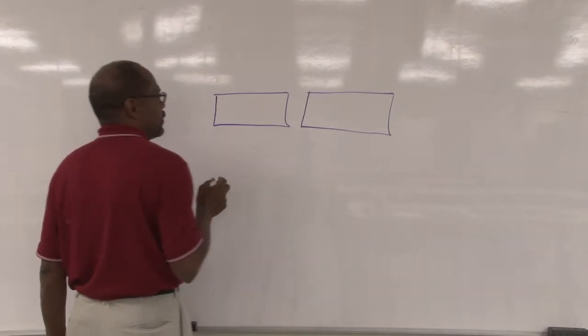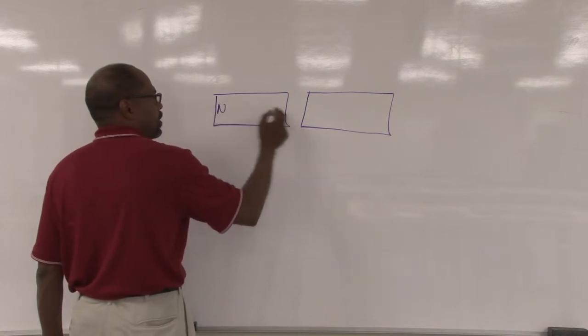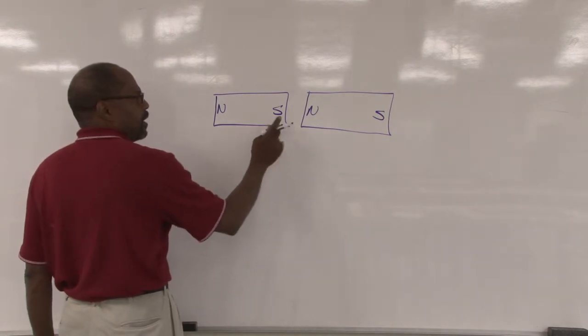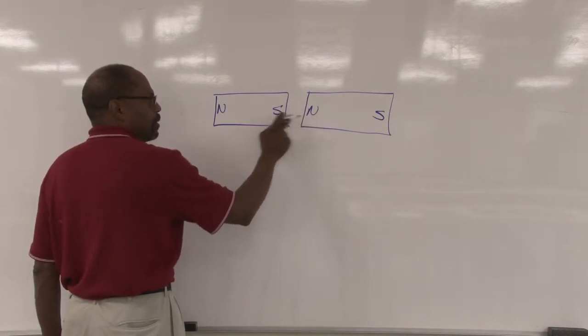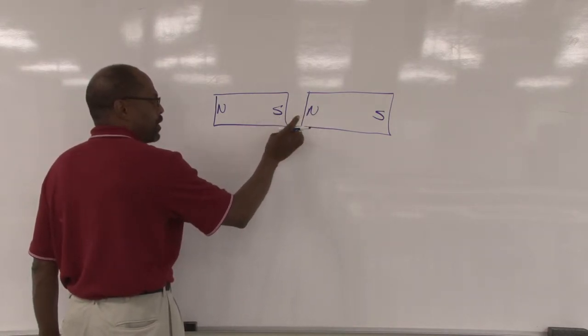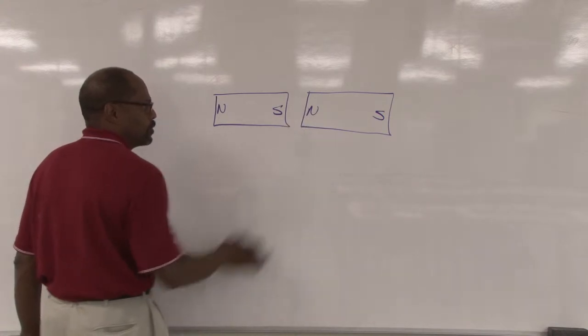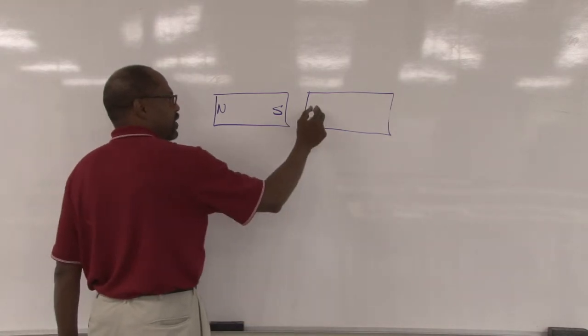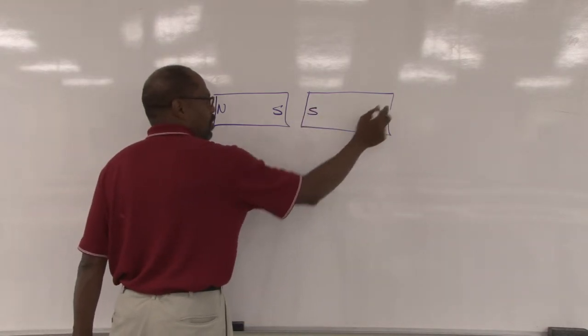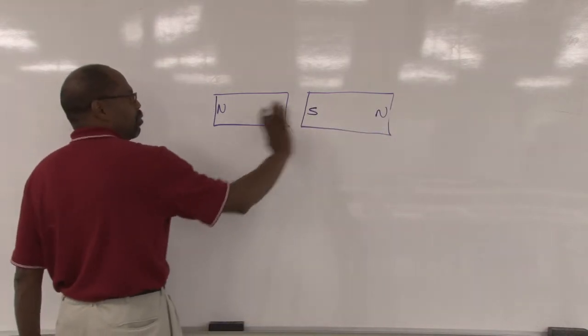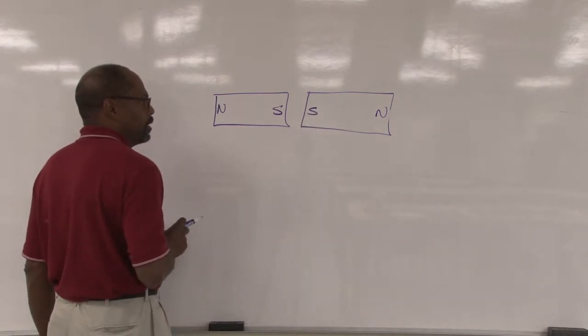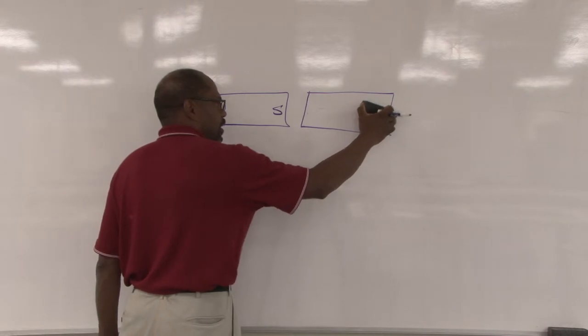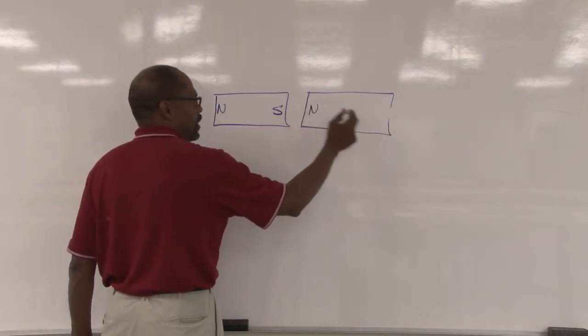This is magnetism. We know that dissimilar poles will attract each other, but like poles will repel. So if I change this to a south pole and this is a north pole, they will push away from each other. But when there's opposite poles, they will attract to each other.